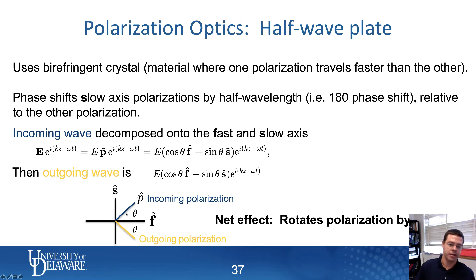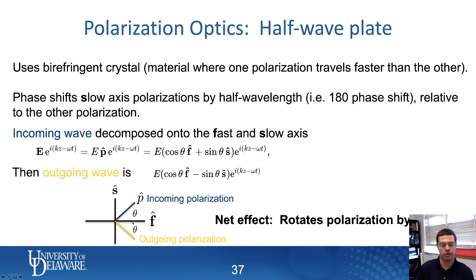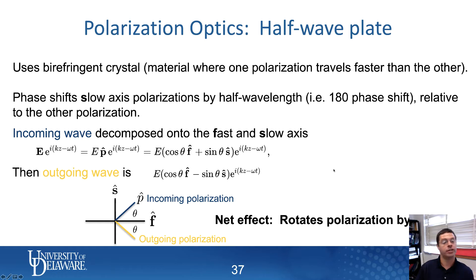So if I think about what that really means — looking at the form of the outgoing wave — the only thing that's different is that it's minus sin θ instead of plus sin θ. That's the same as I would get if the outgoing polarization vector was reflected across the fast axis. So if the incoming polarization was angle θ above the fast axis, then the outgoing one is angle θ below the fast axis. In other words, the net effect is that a half wave plate rotates the polarization by angle 2θ with respect to the fast axis. That's what a half wave plate does — it takes a linear polarization and rotates it by angle 2θ about the fast axis.